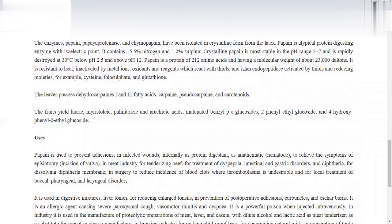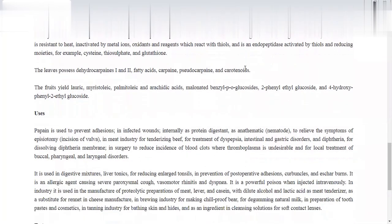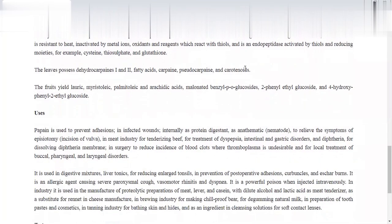The leaves contain dehydrocarpine 1 and 2, fatty acids, carpine, pseudocarpine, and carotenoids. The fruits contain palmitic acid, arachidonic acid, methylated benzoyl glucosides. Uses: to prevent wound adhesions internally, to digest proteins for anthelmintic purposes against nematodes, and to relieve symptoms in episiotomy during normal delivery.